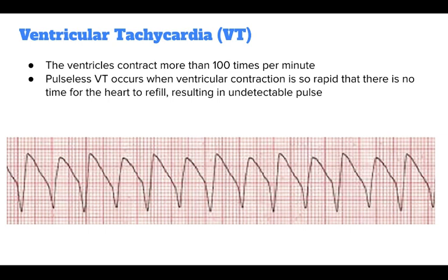VT is a condition in which the ventricles contract more than 100 times per minute. The emergency condition, pulseless VT, occurs when ventricular contraction is so rapid that there is no time for the heart to refill, resulting in an undetectable pulse.